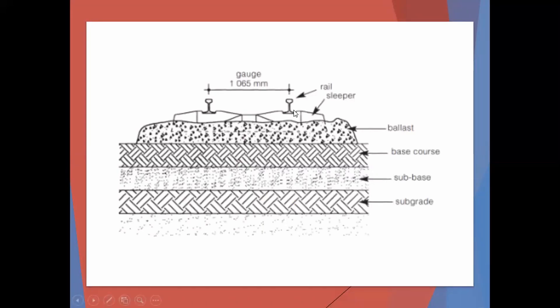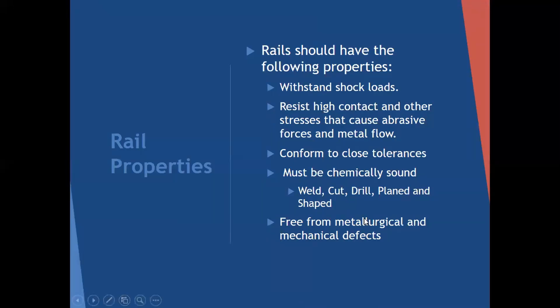So you have your rail, your sleeper, your ballast, and then your base course, sub-base, and sub-grade - which is the same as in roads. Those three lower layers together are all called formation.